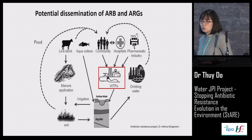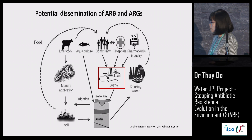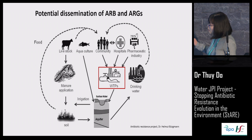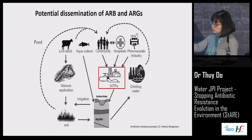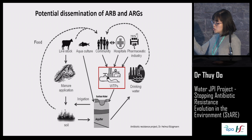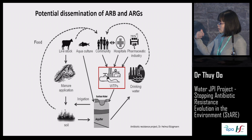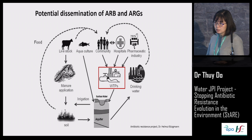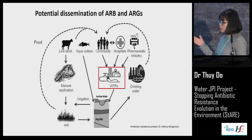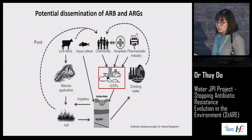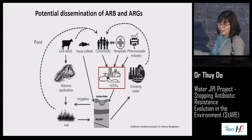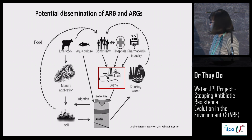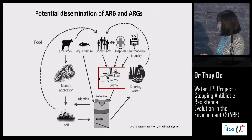Of course, they expose risk to human and animal health because they can come back to the human community through irrigation in agriculture as well. In some countries, they use treated water, retreated again, for drinking water.